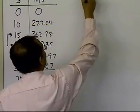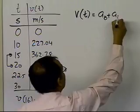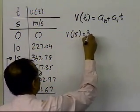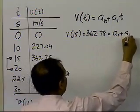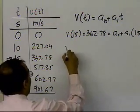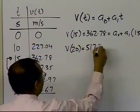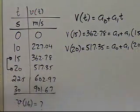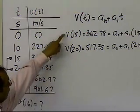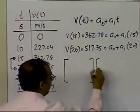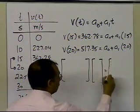So I'm going to choose v(t) = a0 + a1*t as the form of the straight line. Then v(15) = 362.78 gives a0 + 15*a1 = 362.78, and v(20) = 517.35 gives a0 + 20*a1 = 517.35. We have two equations and two unknowns. Writing this in matrix form — with coefficient matrix [[1, 15], [1, 20]], unknown vector [a0, a1], and right-hand side [362.78, 517.35] — you can solve using Gaussian elimination or any method you prefer.